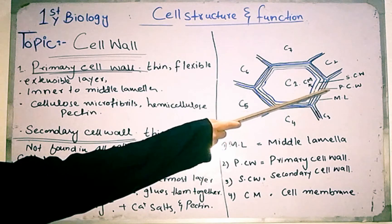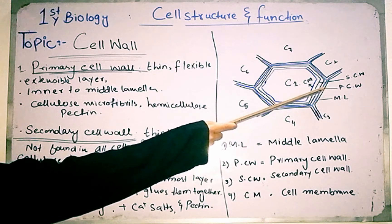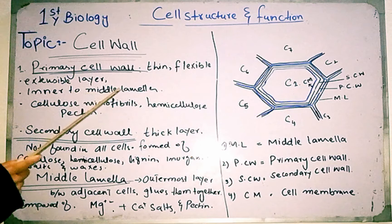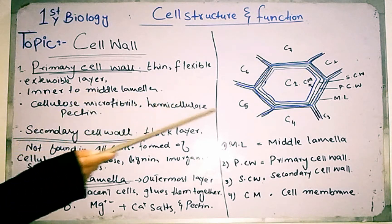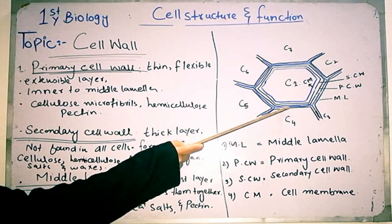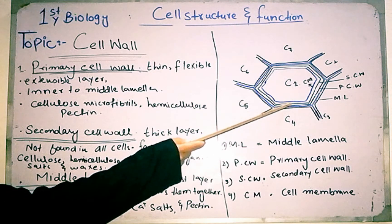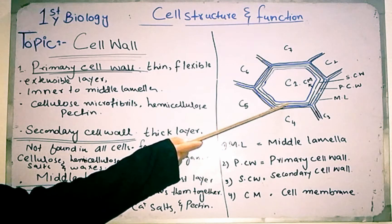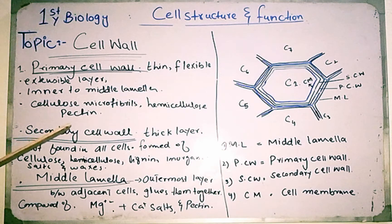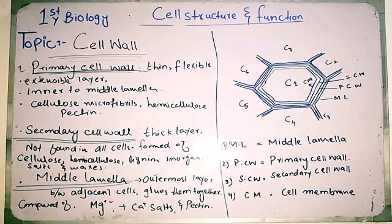After the middle lamella, the primary cell wall is present, and after the primary cell wall, the secondary cell wall is present, followed by the cell membrane or plasma membrane. The blue marker shows the position of the middle lamella — the outer layer between adjacent cells. The primary cell wall is made up of cellulose microfibrils which run in a crisscross arrangement in a matrix of hemicellulose and pectin. Its function is to give strength to the newly growing cells.